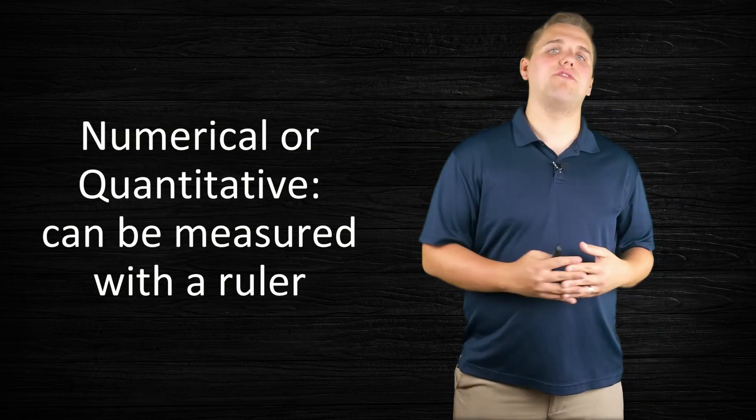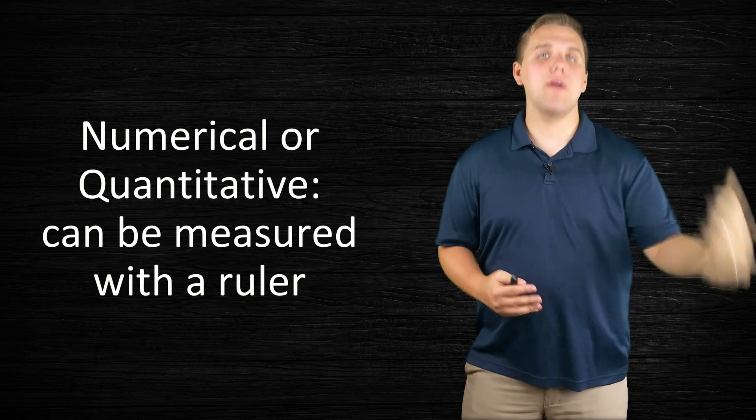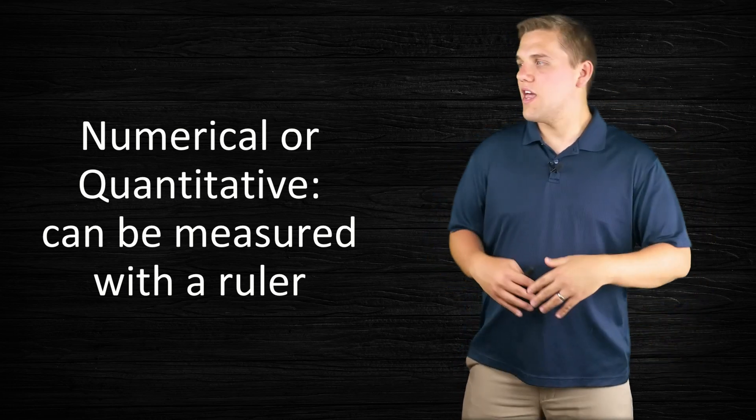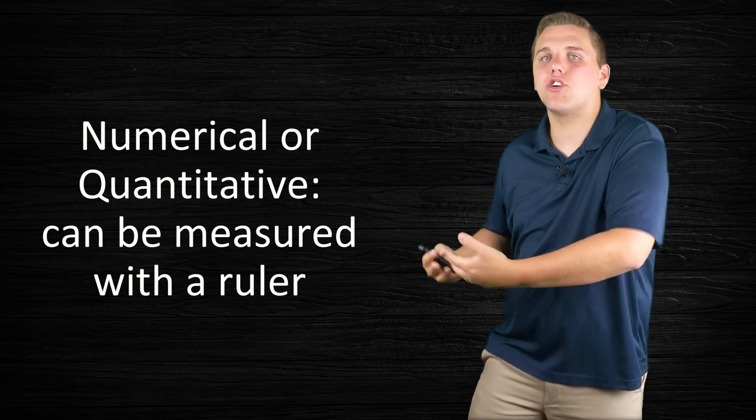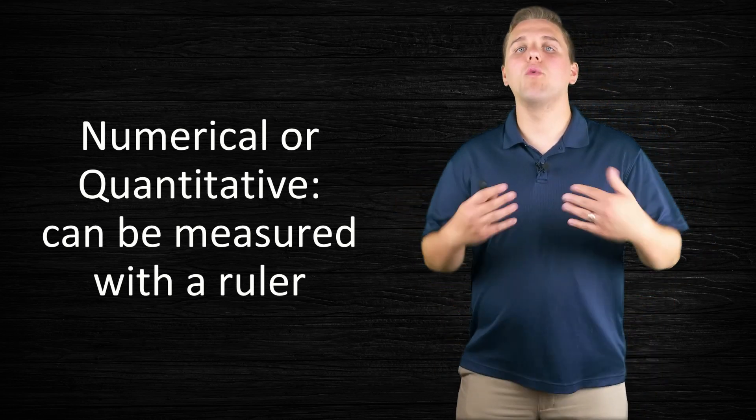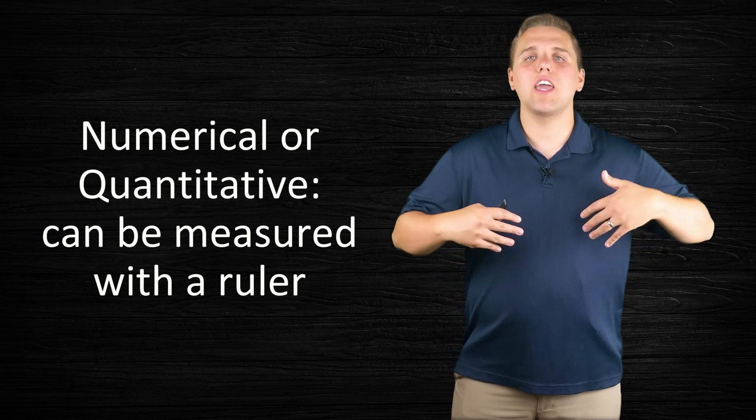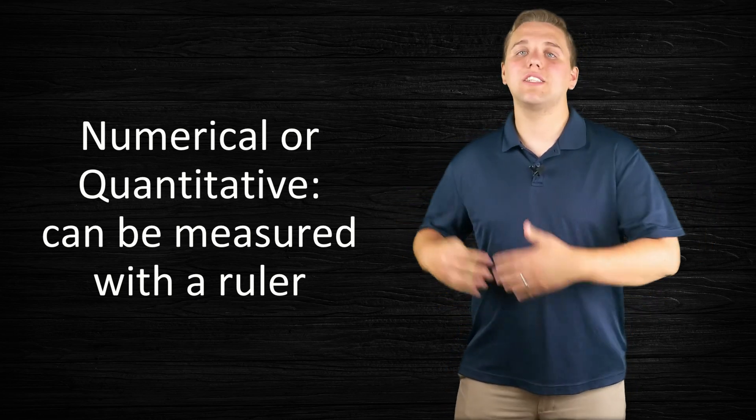The first category of variables we're going to talk about are numerical variables. Some people refer to these as quantitative variables. These are variables that can be measured with a ruler, and by ruler I don't mean the 12-inch ruler you're thinking of. I'm talking about just a unit, like speed,